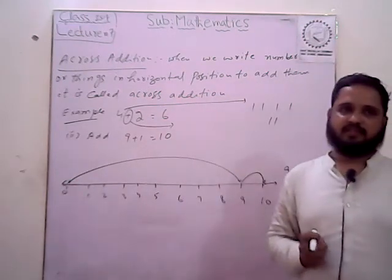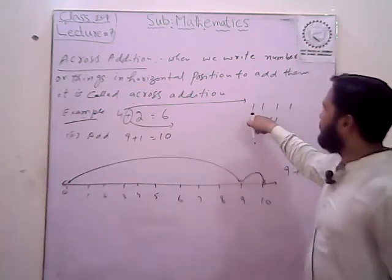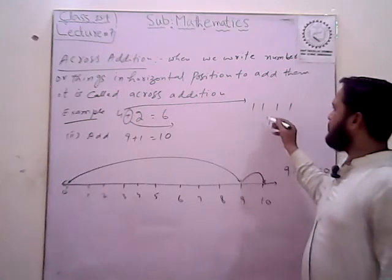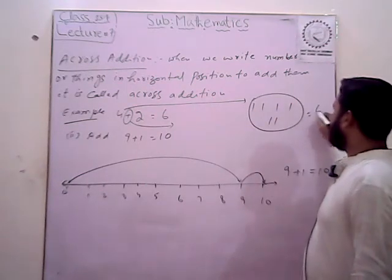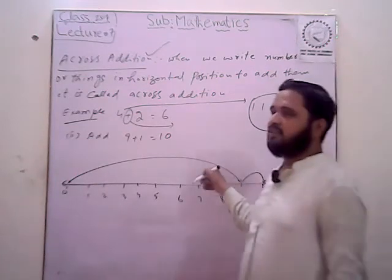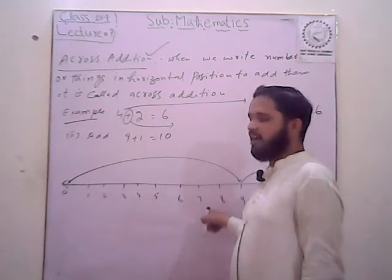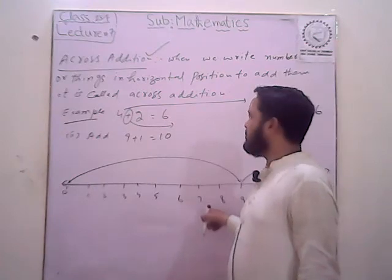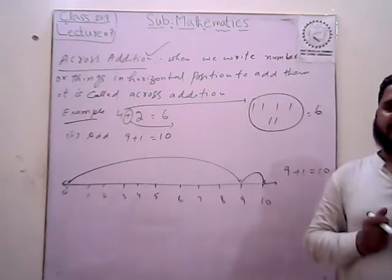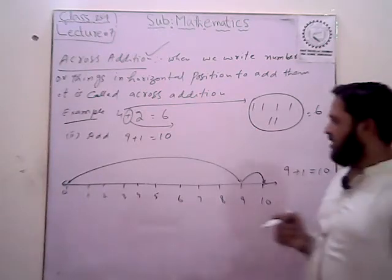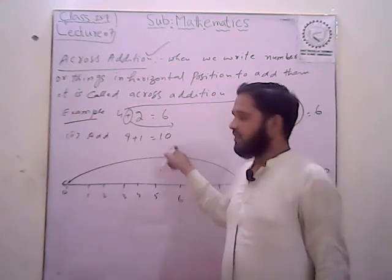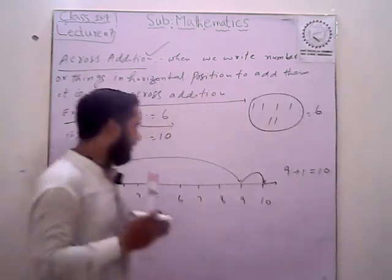Addition — addition means the sum of two things. 1, 2, 3, 4 and 5, 6 — so the total lines equal 6. Now the cross addition is shown in the form of these lines. You can see on the board: 4 plus 2 equals 6. You can also draw 9 plus 1 equals 10. In the line, we draw 9 plus 1, which equals 10. You can see on the board — I have drawn a line representing the number 10.